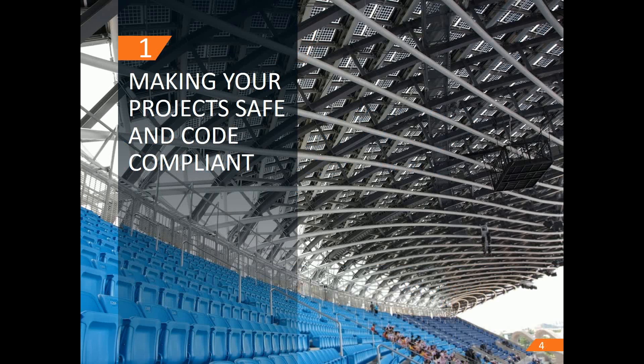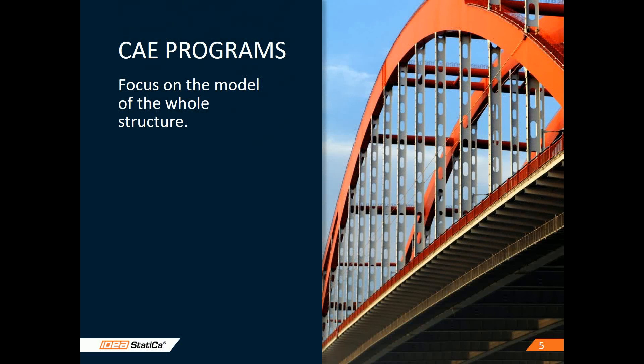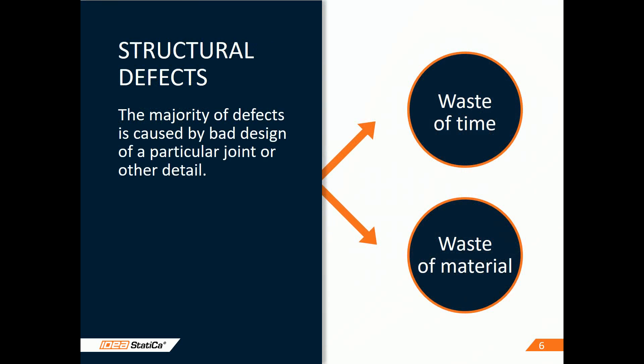We all want to build safe structures. You all use one of the CAE or Finite Element Analysis programs, such as SAP2000 and STAAD.Pro. These are great tools to model the structure as a whole, but the majority of structural defects in steel structures are related to details — the connections — and the calculation capabilities of CAE programs for their design are limited.